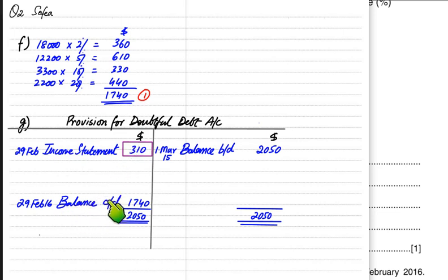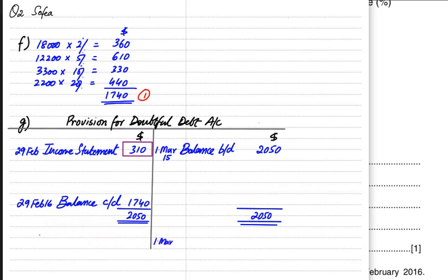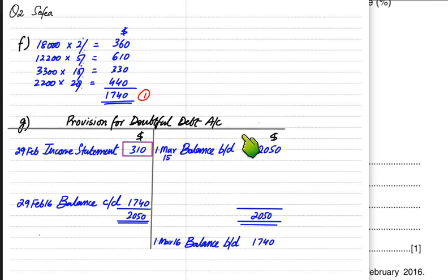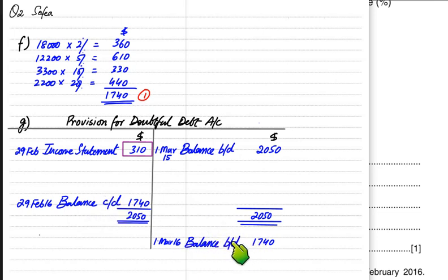This balance carried down at the end of the year becomes balance brought down at the start of the next period. After 29th February it becomes 1st March again — this time March 2016, so the new year starts on 1st March 2016. In a provision account, balance brought down always comes on the credit side no matter what, and balance carried down always comes on the debit side — these two sides are fixed.